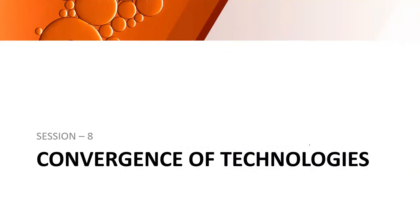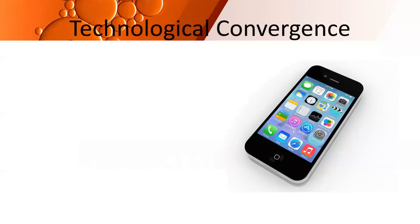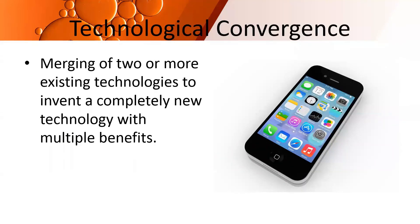With this, we complete Session 7 — types of computers. Now we move to the next topic: convergence of technologies. Technological convergence is the merging of two or more existing technologies to invent a completely new technology with multiple benefits. A smartphone is a very good example of the merging of multiple technologies.